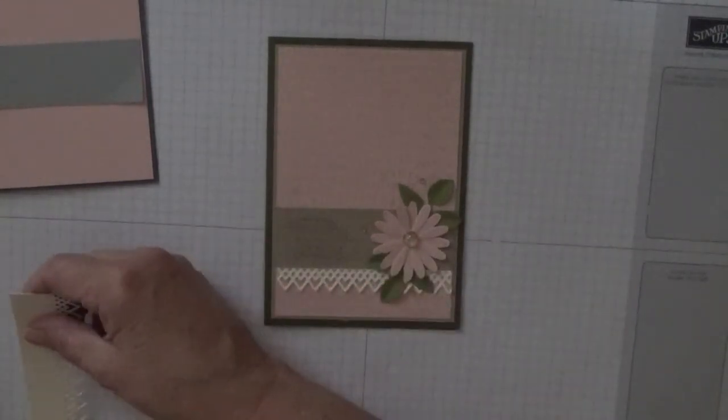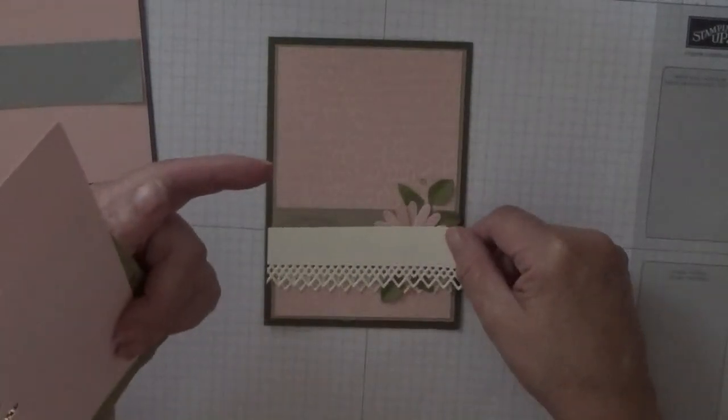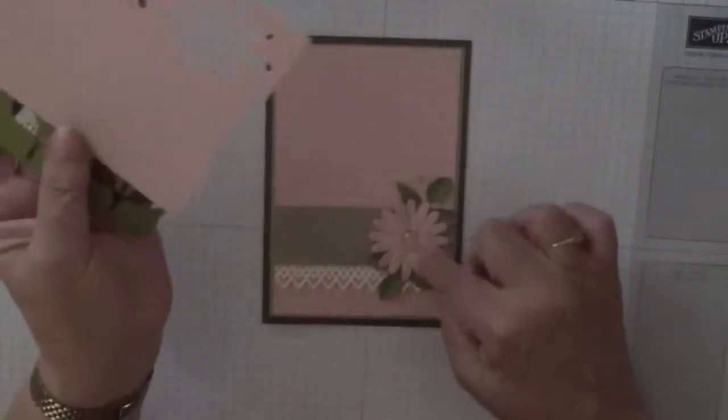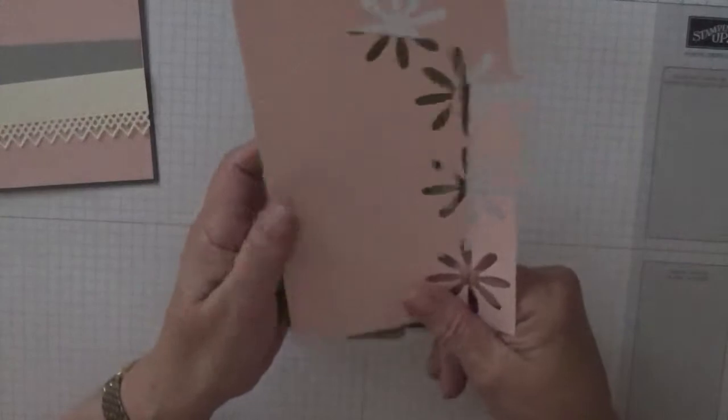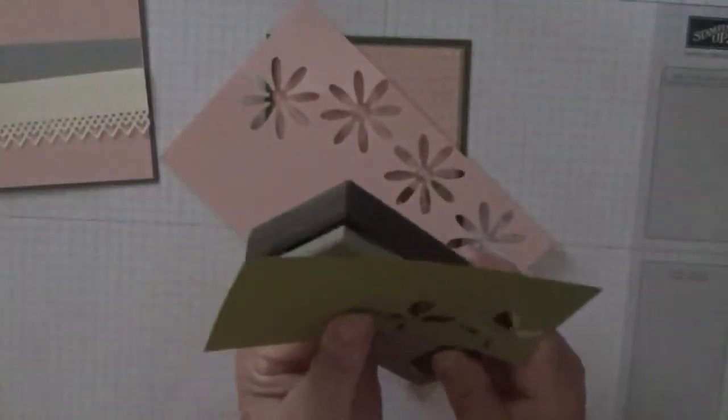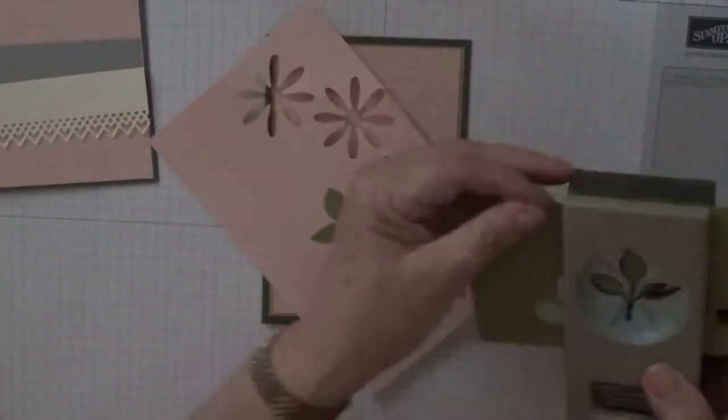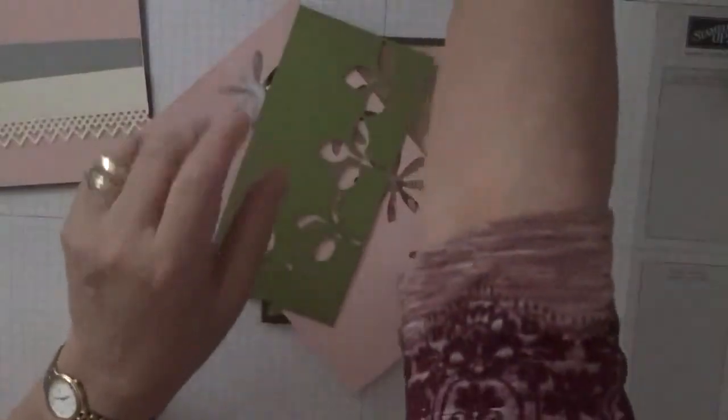And this started off at about one and three eighths and then I cut that. It's supposed to be three and seven eighths but it's a bit longer and I will trim it. I've got some scraps for the daisy and for the leaves we'll be using the leaf punch for this which we'll do now. We need two and that's them done.